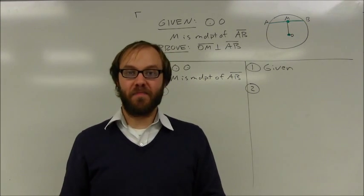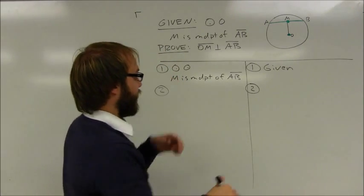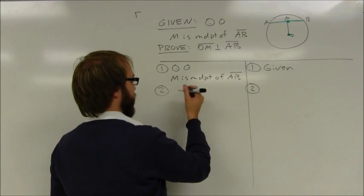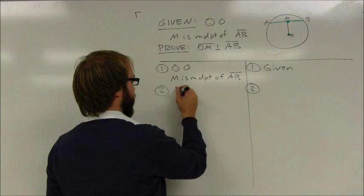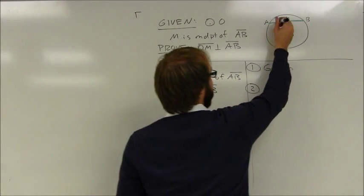If I can show that, then I can use one of the equidistance theorems. So my goal here is to show that AM is congruent to MB. Well, I know that because it's a midpoint, M is a midpoint. So I do know that AM is congruent to MB. I can go ahead and mark that in my diagram.